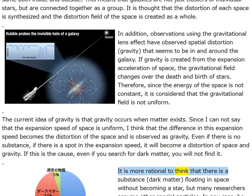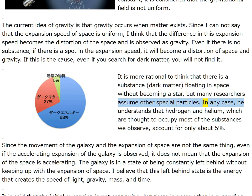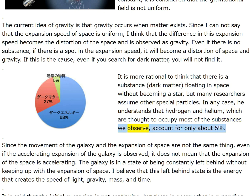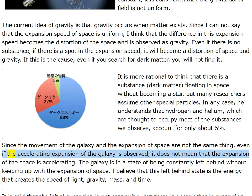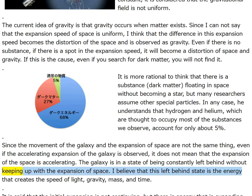It is more rational to think that there is a substance (dark matter) floating in space without becoming a star, but many researchers assume other special particles. Hydrogen and helium account for only about five percent of observable substances. Since the movement of the galaxy and the expansion of space are not the same thing, the accelerating expansion of the galaxy does not mean the expansion of space is accelerating. The galaxy is constantly left behind without keeping up with the expansion of space.